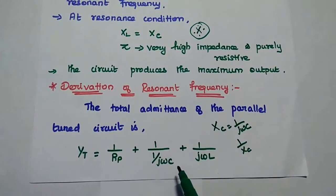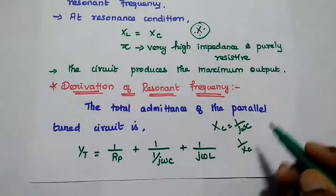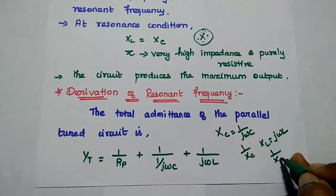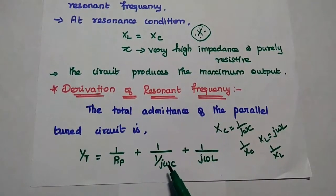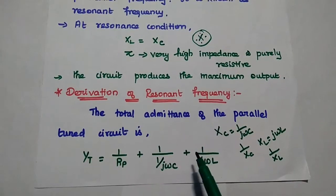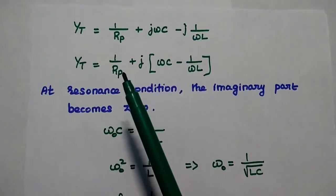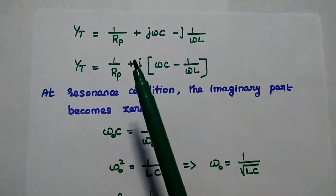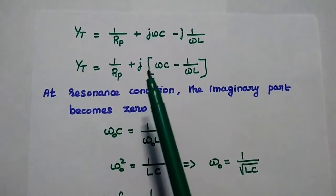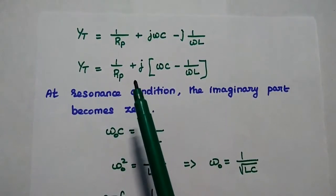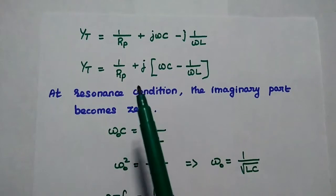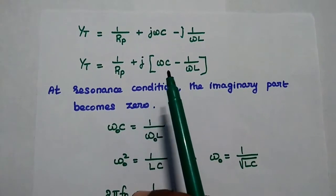We also add 1 by j·omega·L, where XL equals j·omega·L, so admittance means 1 by XL. In the next step, we move j·omega·C to the numerator and convert 1 by j into minus j. So we get: Yt equals 1 by Rp plus j·omega·C minus j·(1 by omega·L). Taking j as a common term gives: Yt equals 1 by Rp plus j·(omega·C minus 1 by omega·L). This is the total admittance of the parallel resonant circuit.